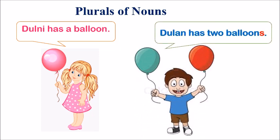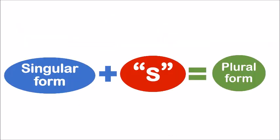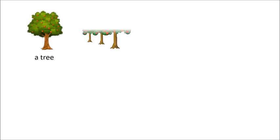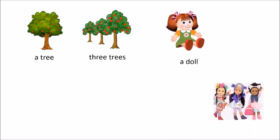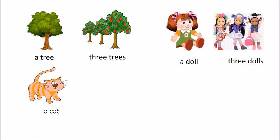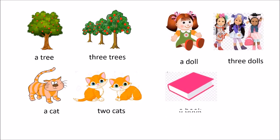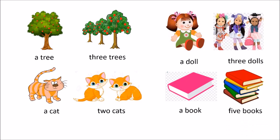Study the pictures and read the sentences. In the first picture, Dulni has a balloon. In the second picture, Dulan has two balloons. Did you notice how we made the plural form of balloon? The letter S has been added to the end of the word balloon. The common rule of forming plural form is by adding S to the singular nouns. One tree, three trees. A doll, three dolls. A cat, two cats. A book, five books.